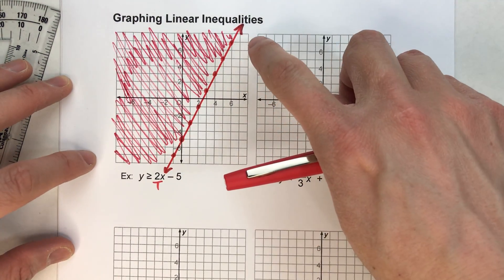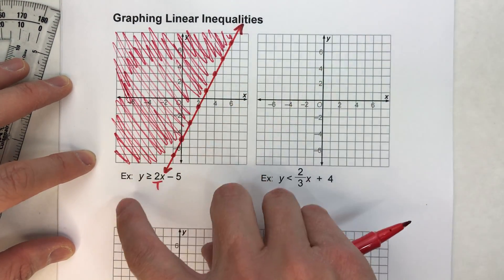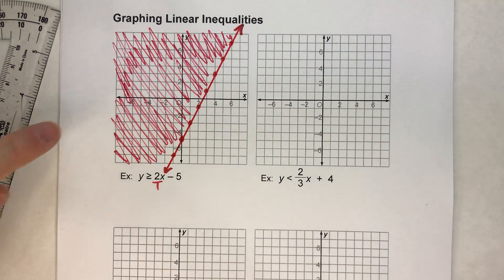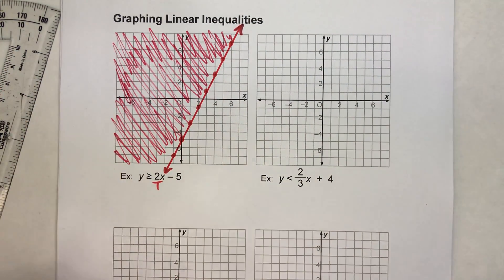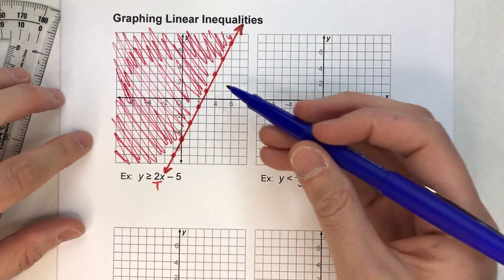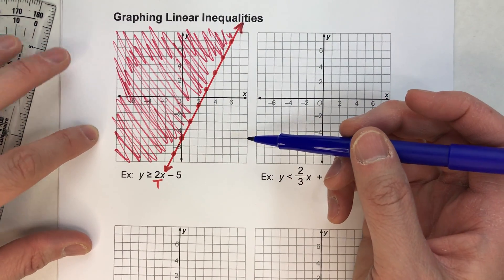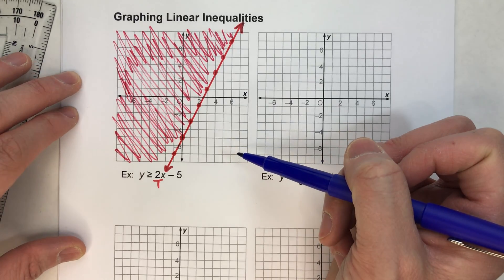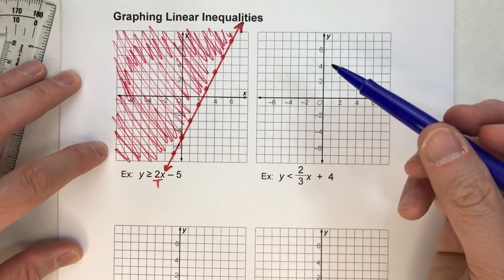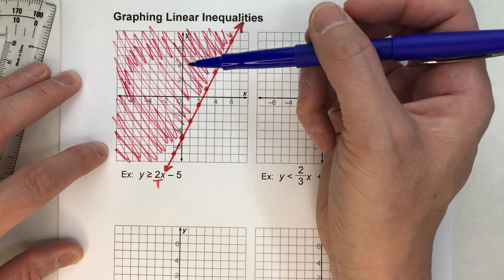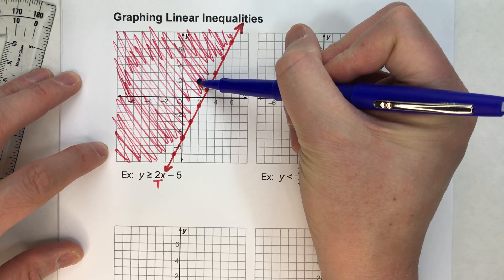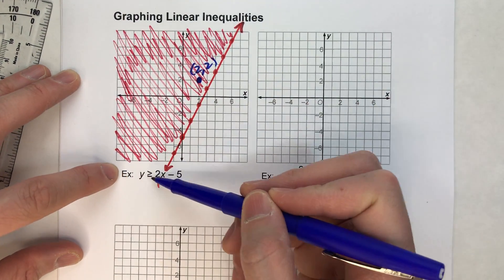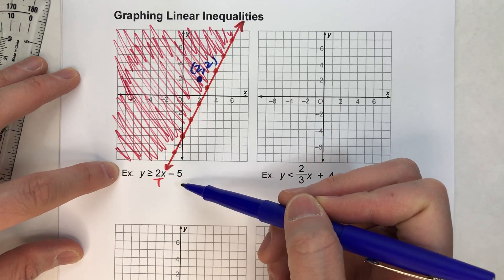The graph of a linear inequality is a line and a shaded region, because any point in this shaded region is a solution. Anytime we deal with graphs of inequalities, it's good to check a point in the shaded region and the non-shaded region, just to make sure we didn't get things mixed up. So I'm going to pick an easy point. Let's pick the point 2, 2. If I put 2, 2 in my inequality, it should make a true statement.